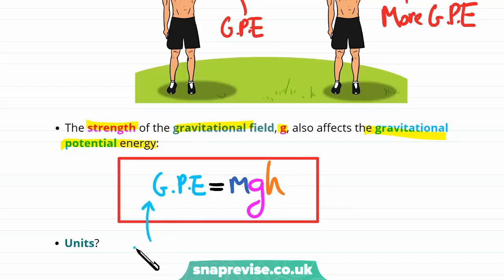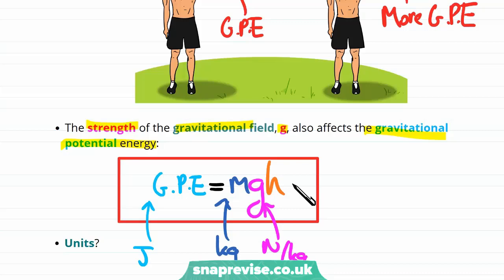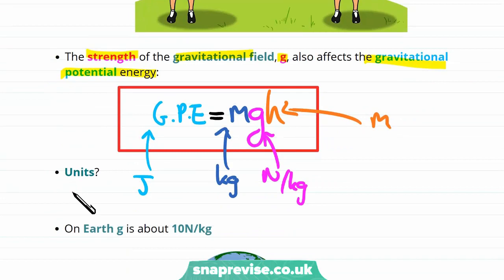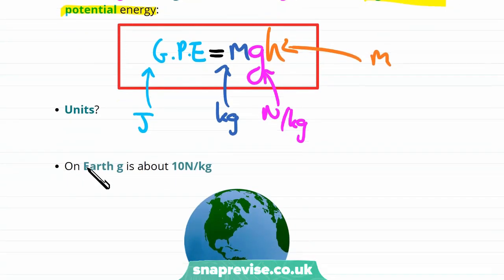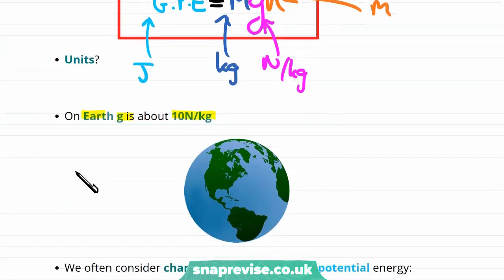The units in this equation are: energy in joules, mass in kilograms, gravitational field strength in newtons per kilogram, and height in meters. On Earth, the gravitational field strength G is about 10 newtons per kilogram.